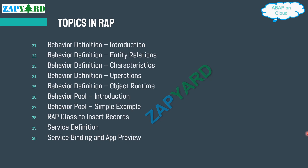Moving on to the even more interesting topics that form the basics of ABAP on cloud development, we include behavior definition. The behavior definition introduction, the entities and the entity relationships which are part of business definitions, the characteristics of behavior definition, the operations that are part of behavior definition, and also the object runtime sequence — all of these will be looked into as part of this web series.